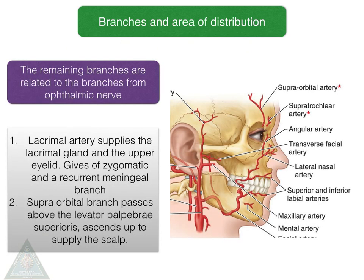The remaining branches are related to the branches from the ophthalmic nerve. The lacrimal artery supplies the lacrimal gland and the upper eyelid, and gives off zygomatic and a recurrent meningeal branch. The supraorbital branch passes above the levator palpebrae and ascends up to the scalp to supply it.